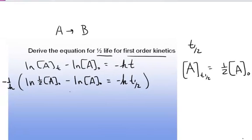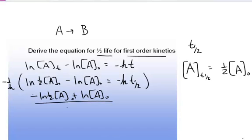And when I do that, I can rearrange my equation to be negative the natural log of one-half A-naught, plus the natural log of A-naught over k, equals T one-half.